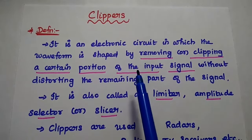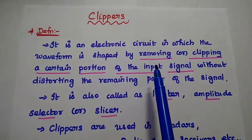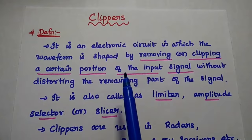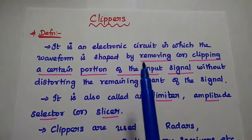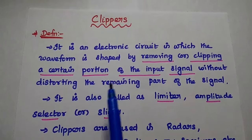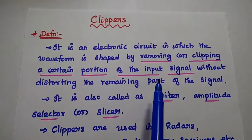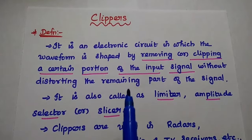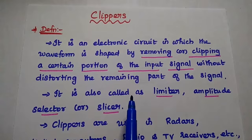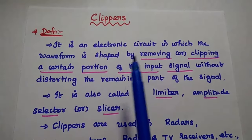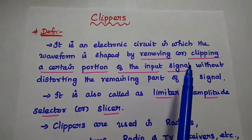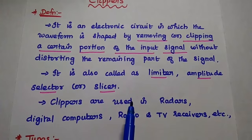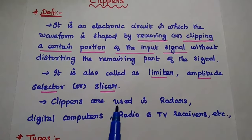Now we are going to discuss clippers and its types in detail. A clipper is an electronic circuit in which the waveform is shaped by removing or clipping off a certain portion of the input signal without disturbing the remaining part of the signal. Clippers are types of wave shaping circuits. It is also called a limiter, amplitude selector, or slicer.